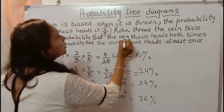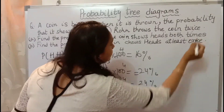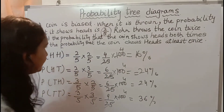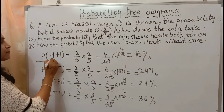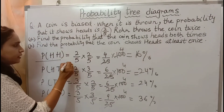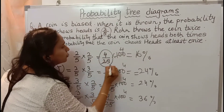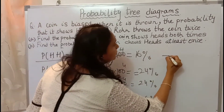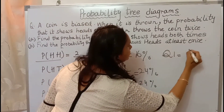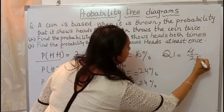Now let's come to the first question: find the probability that the coin shows heads both times. Both times heads means first time heads and second time also heads, so the probability is 4 by 25. The answer to question 1 is 4 by 25.